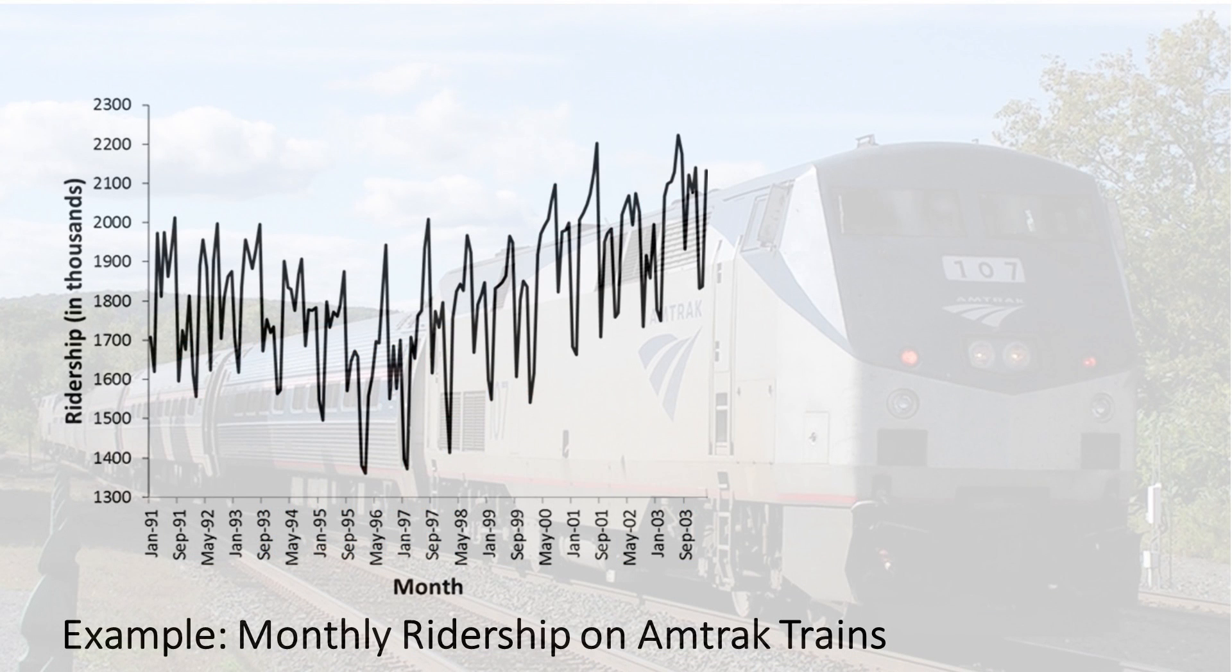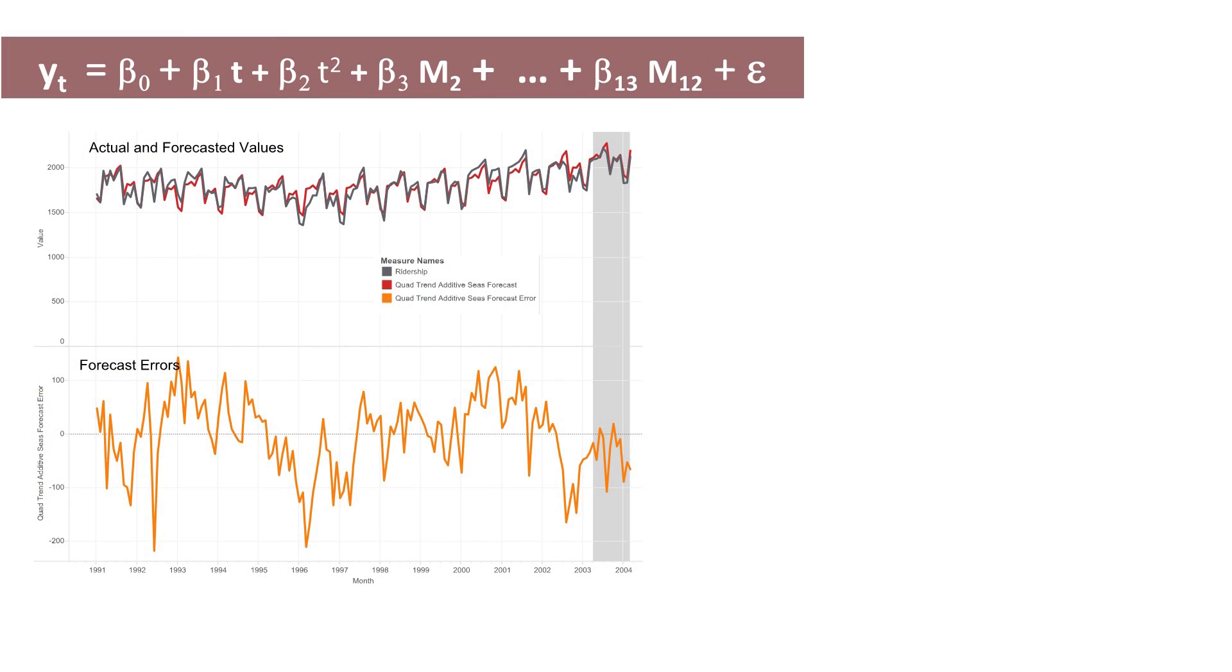Let's look at autocorrelation through the example of the monthly ridership on Amtrak trains. Recall that this series has a U-shaped trend and monthly seasonality. Therefore, our best model thus far was a regression model with a quadratic trend and monthly additive seasonality.